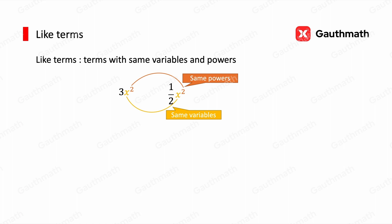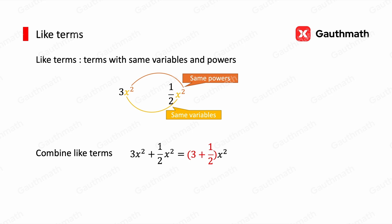So how do we combine like terms? Suppose we are adding the two terms together. The first step is to isolate the two coefficients. We gather them and the expression equals (3 + 1/2)x squared. Then we calculate 3 plus 1/2, which is 7/2 x squared.